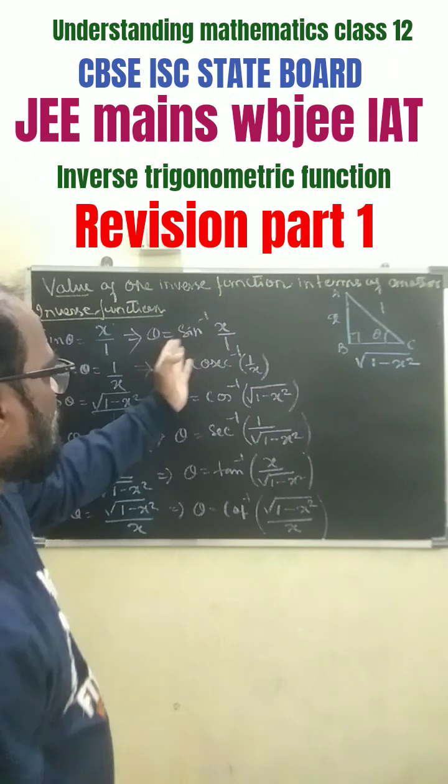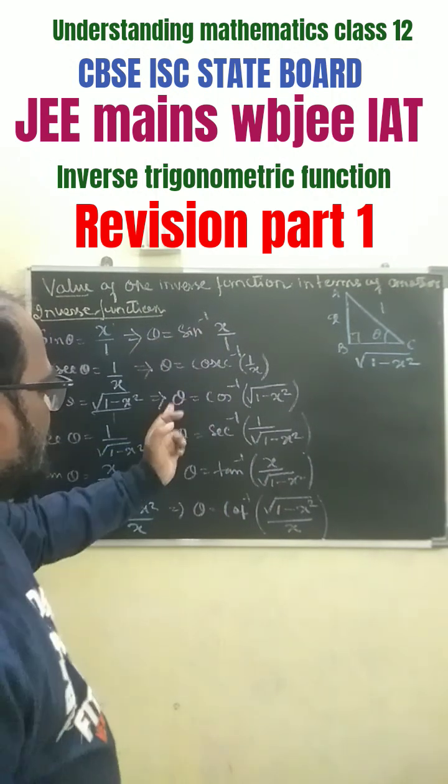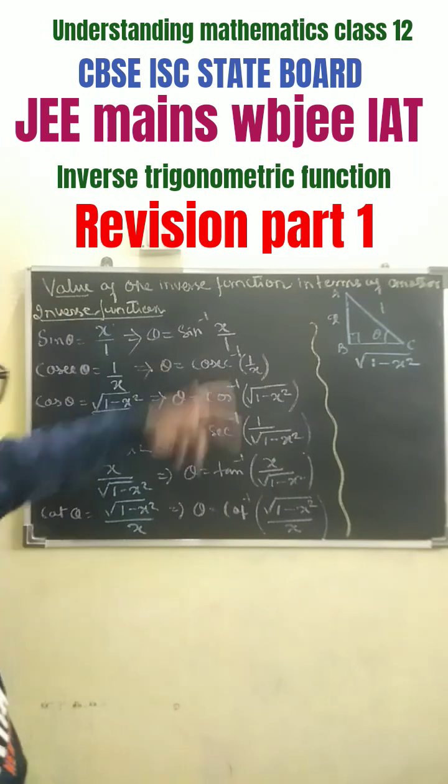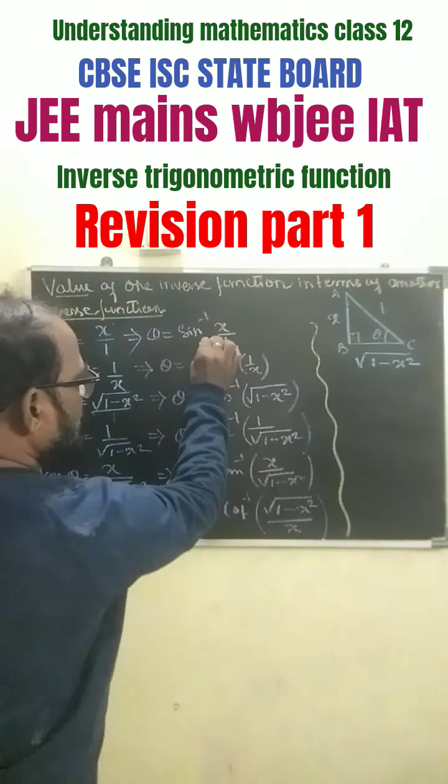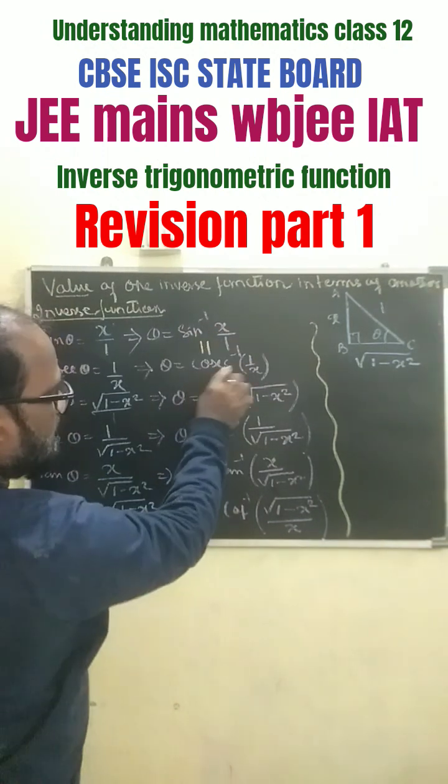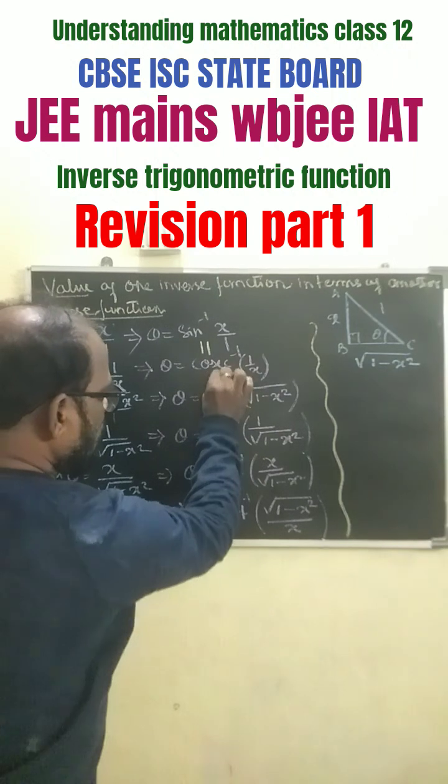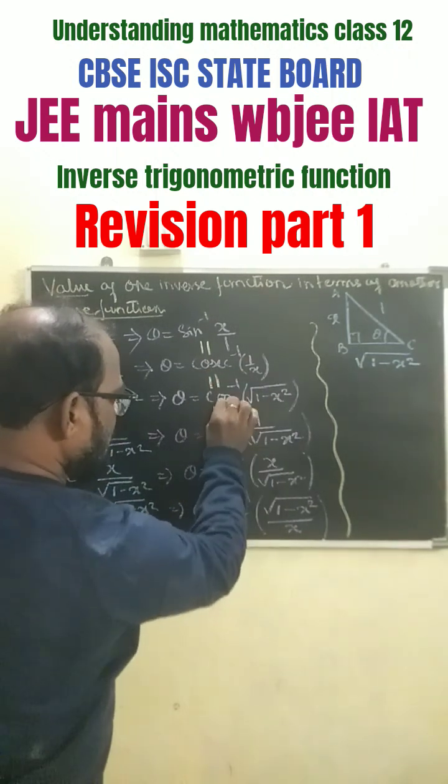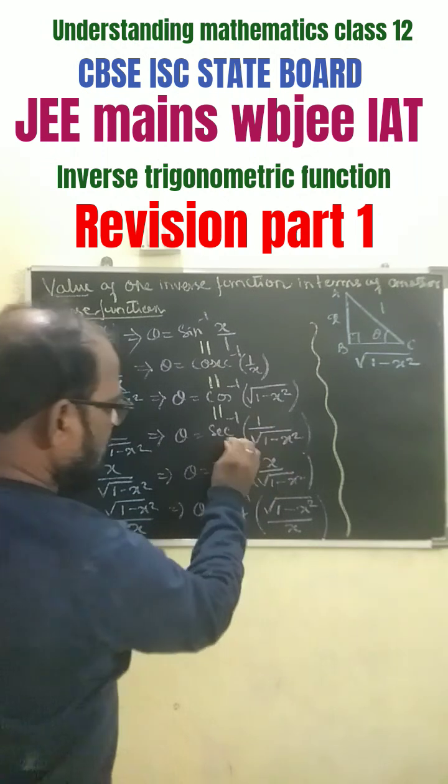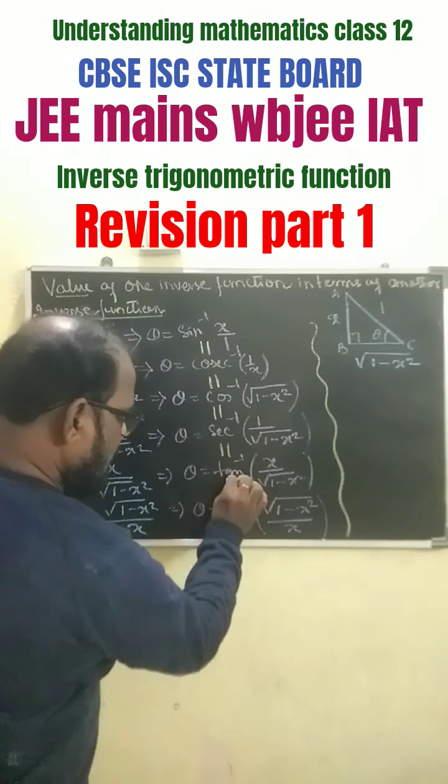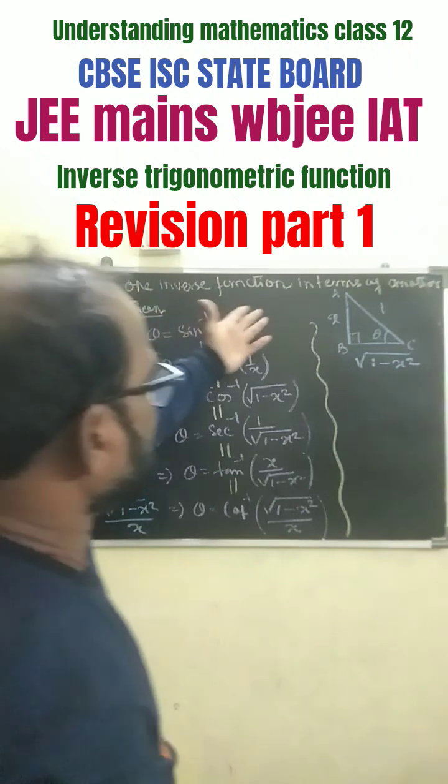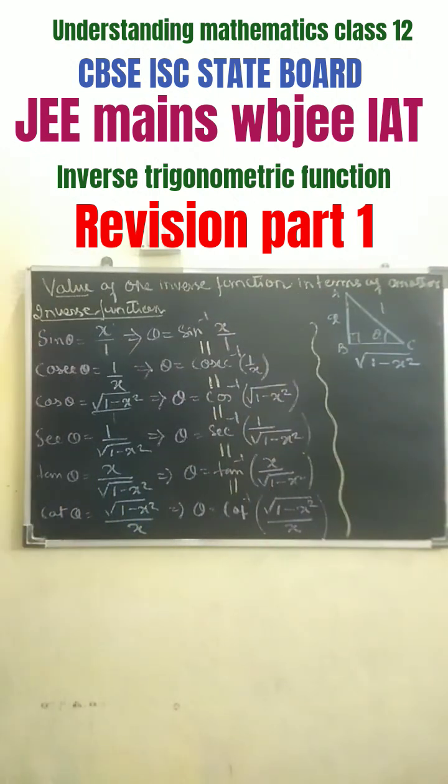Finally, from this we can conclude that sin inverse x is equal to sec inverse 1 by x, which equals cos inverse root over 1 minus x squared, which equals tan inverse x by root over 1 minus x squared. In this way, we can have the value of one inverse function in terms of another inverse function.